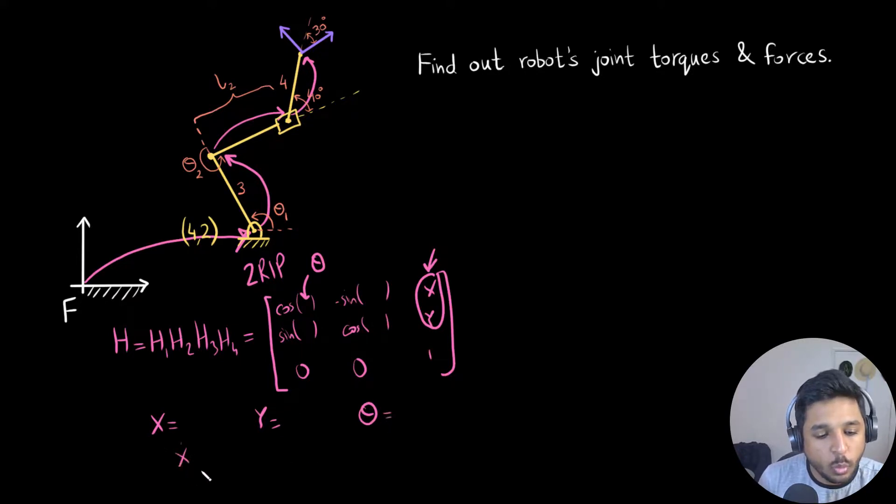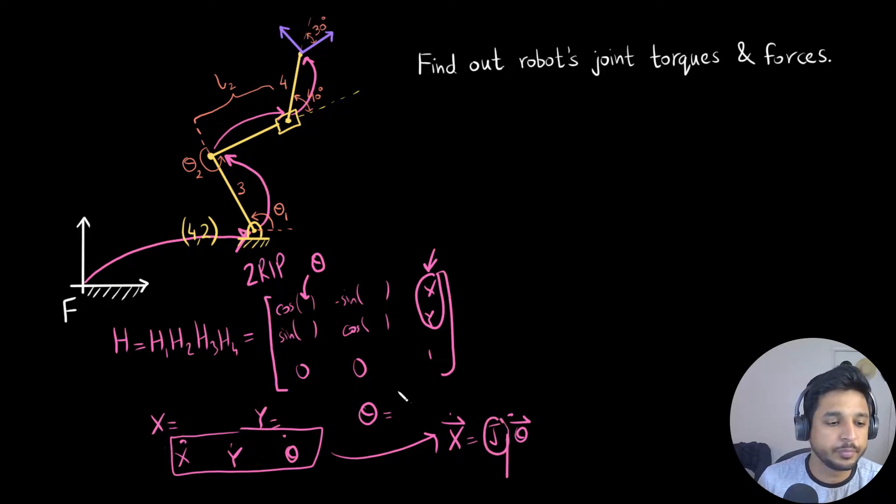Once you have x dot, y dot, and theta dot, then you would do a, what you would do is you would just compare it to this term: x dot equals to Jacobian times theta dot. Using these three equations that you have, you are going to formulate this and then grab out the Jacobian from here. If you don't get it, don't worry. I have talked about the Jacobian in a lot of detail in the previous video. So go back and check the Jacobian videos. It was just meant for a very quick recap of how to get the Jacobian.